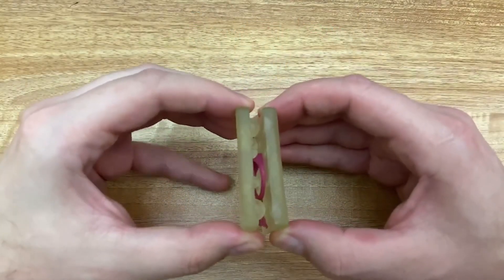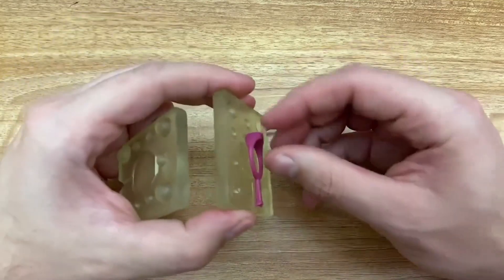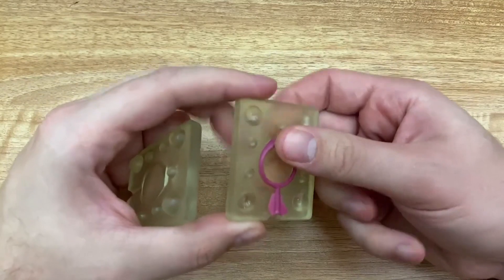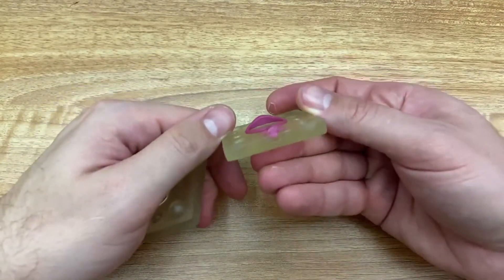The second part of that video was printing a flexible mold in Siraya Tenacious. Now this one didn't really work out so well, but it's a topic that we wanted to revisit, so this is going to be kind of part one of that revisit.